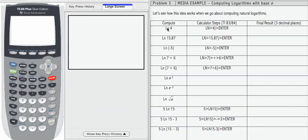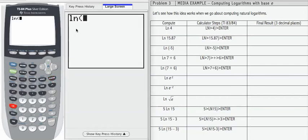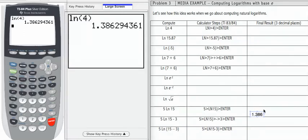First one, natural log of 4. We're going to use the natural log button. Notice the parentheses is given to you. I'm going to enter the input of 4 in the parentheses and click enter to get my result, 1.386 rounded to the third decimal place.